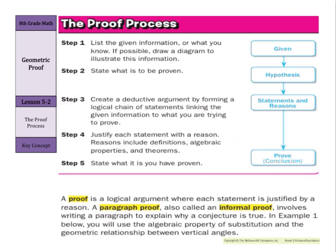Now, what is our proof process? Step one: list the given information, or what you know; if possible, draw a diagram to illustrate this information. Step two: state what is to be proven. Step three: create a deductive argument by forming a logical chain of statements linking the given information to what you are trying to prove. Step four: justify each statement with a reason — reasons could include definitions, algebraic properties, and theorems. Step five: state what it is that you have proven.